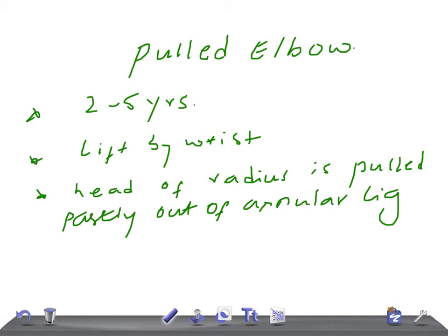Because of this, the child keeps their forearm in pronation position. So you got an idea. Usually on examination, they will tell you that the child of two years is crying excessively and has kept their forearm in pronation position.